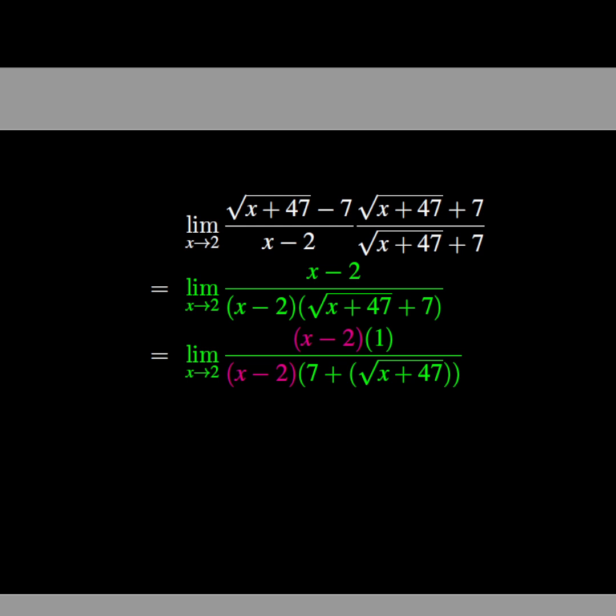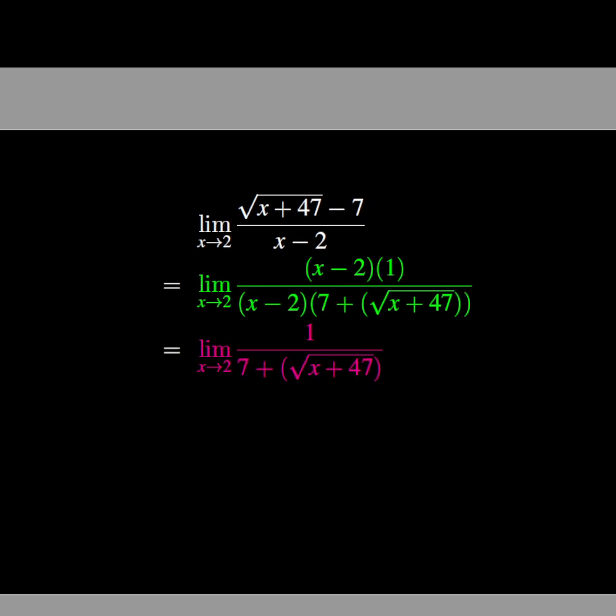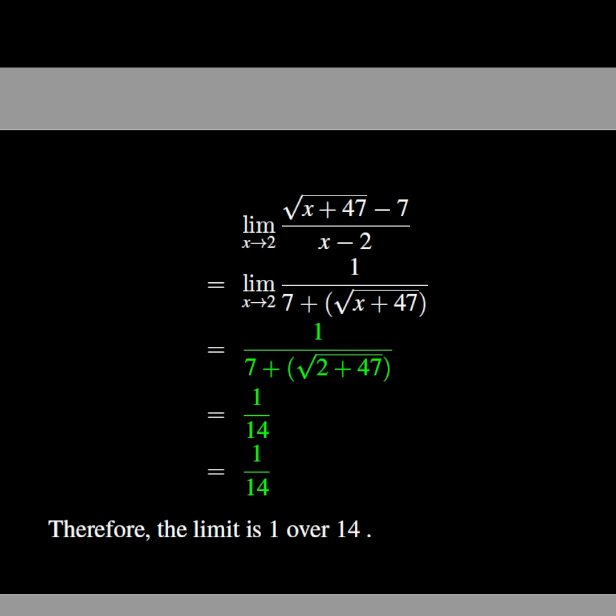The common factor appearing on both numerator and denominator is (x - 2). We simplify this common factor and obtain the limit as x approaches 2 of 1/(7 + √(x+47)). Finally, when we plug 2 into the expression, we find that the limit is 1/14. Therefore, the limit is 1/14.